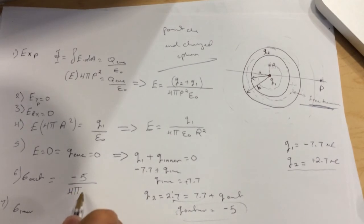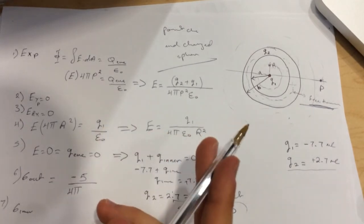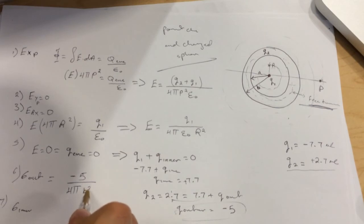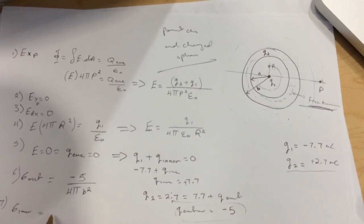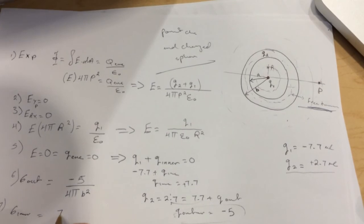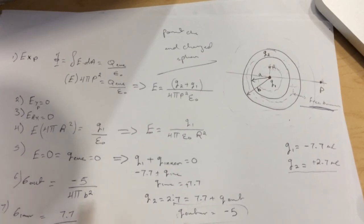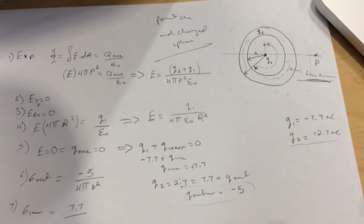Which is 4π times b², and for the inner we'll be using 7.7 divided by the area of the inside which is 4πa².